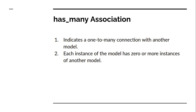The has_many association indicates a one-to-many connection with another model, and an instance of the model has zero or more instances of another model. For example, as we discussed in the last video, every post can have multiple comments, but it's also possible that a post has no comments — if you posted something and nobody provided any comment, your post model has zero comments. But it's also possible that there are multiple users commenting on that post, meaning the post has multiple comments.